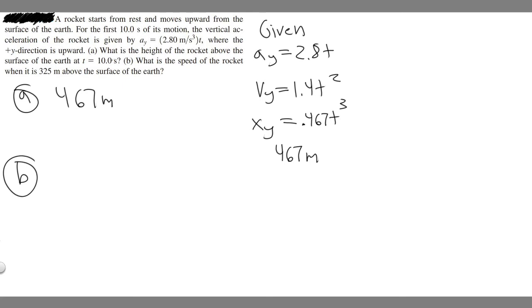So B is going to be what is the speed of the rocket when it is 325 meters above the surface of the earth? So there's going to be two steps to this problem. Keep in mind, it's going to be like the last one where we have some time and we're going to plug it in and we can get velocity. But we need to know at what time is it 325 meters above the surface and how can we find that?